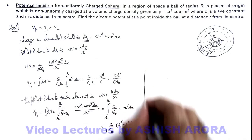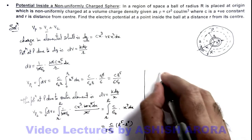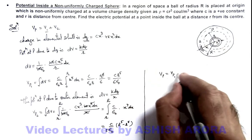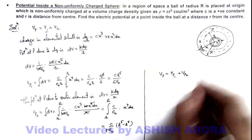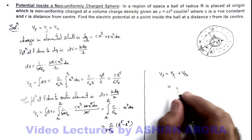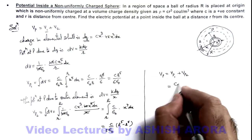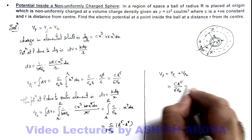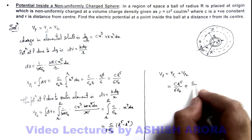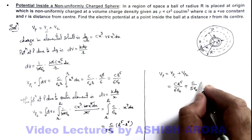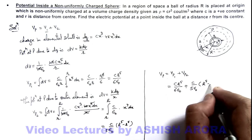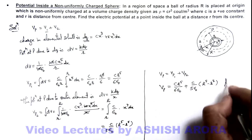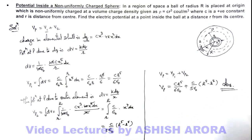The total potential at point P is V_P = V1 + V2. Adding the two results: V_P = cr⁵/(6ε₀) + (c/5ε₀)(R⁵ − r⁵). This is the potential at point P, which is the final result to this problem.